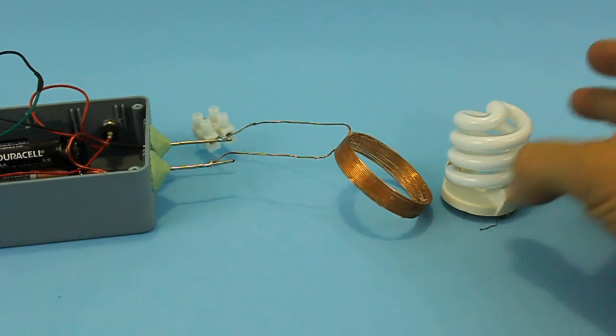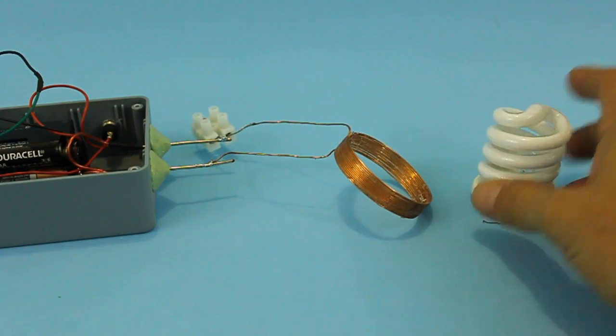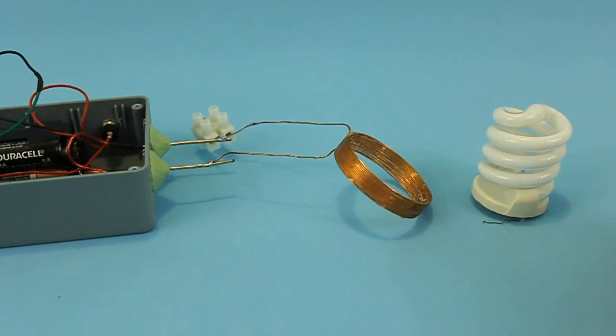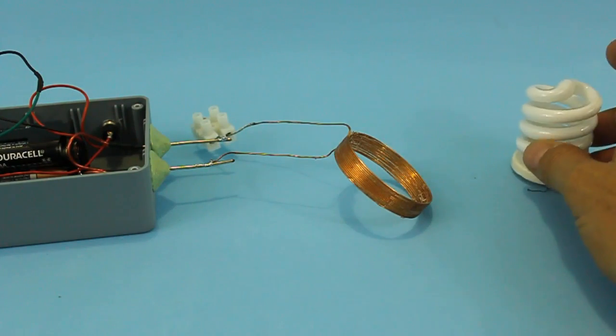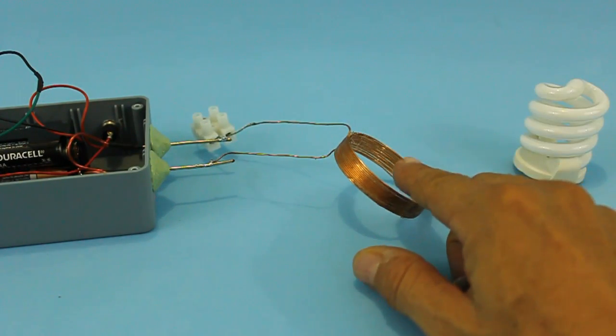As we could see, the lamp turns on when the system is working, which indicates that we have a strong magnetic field generated by the coil.